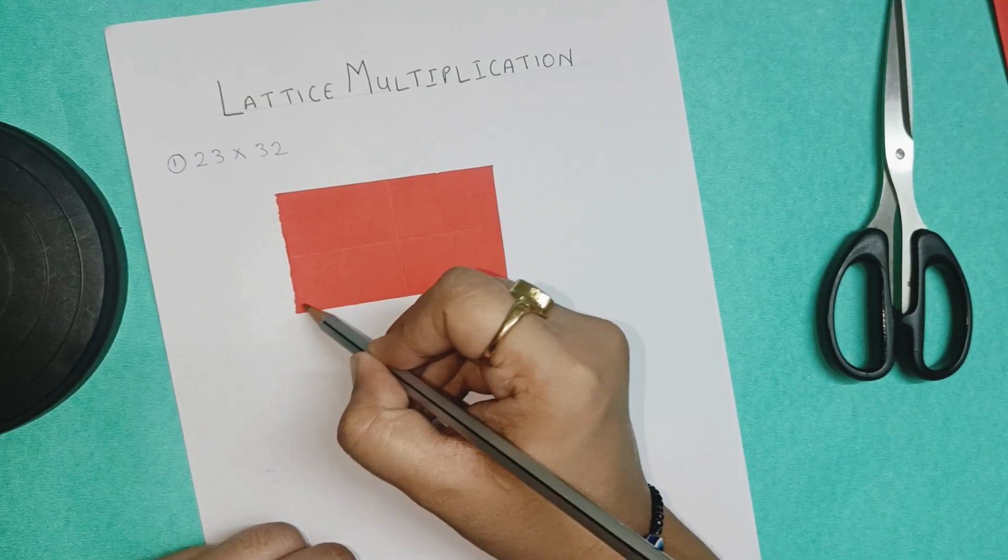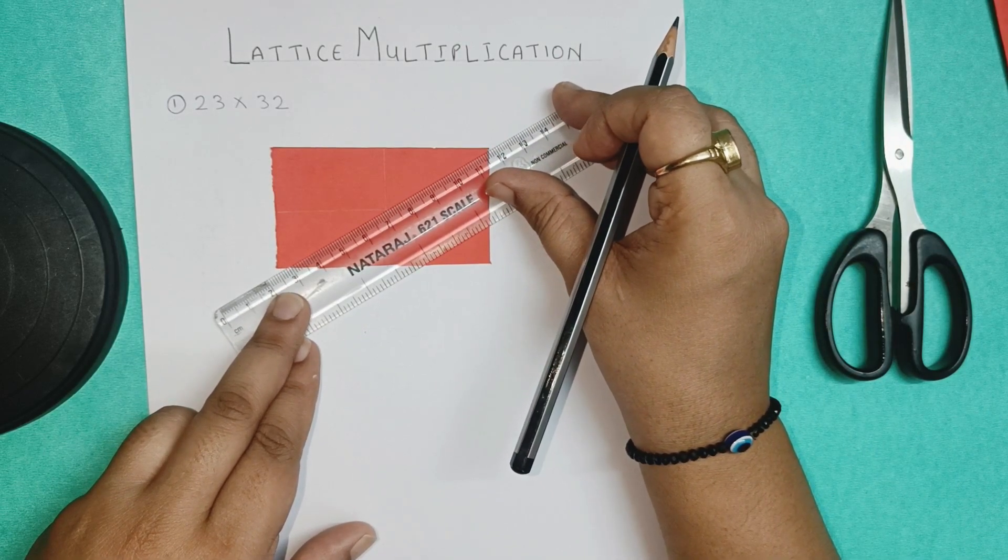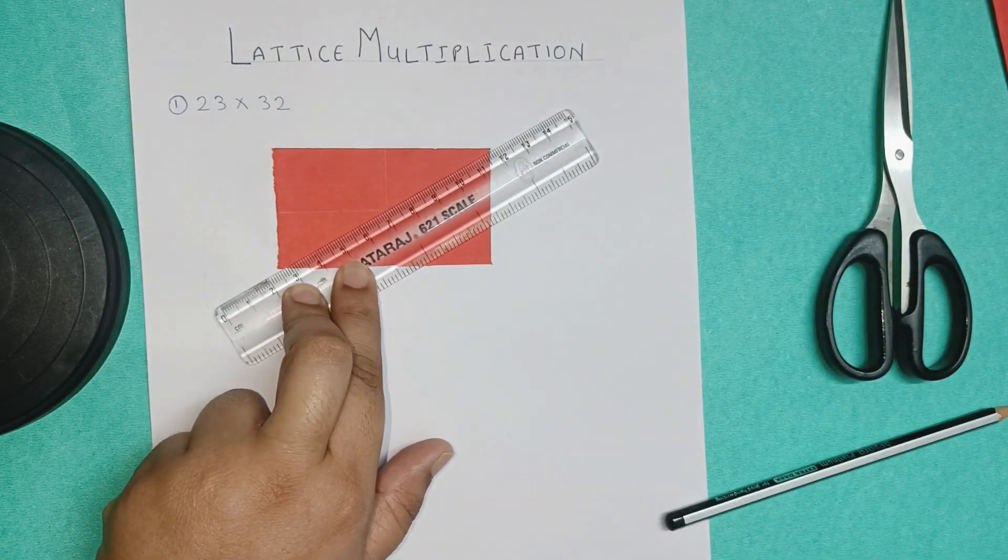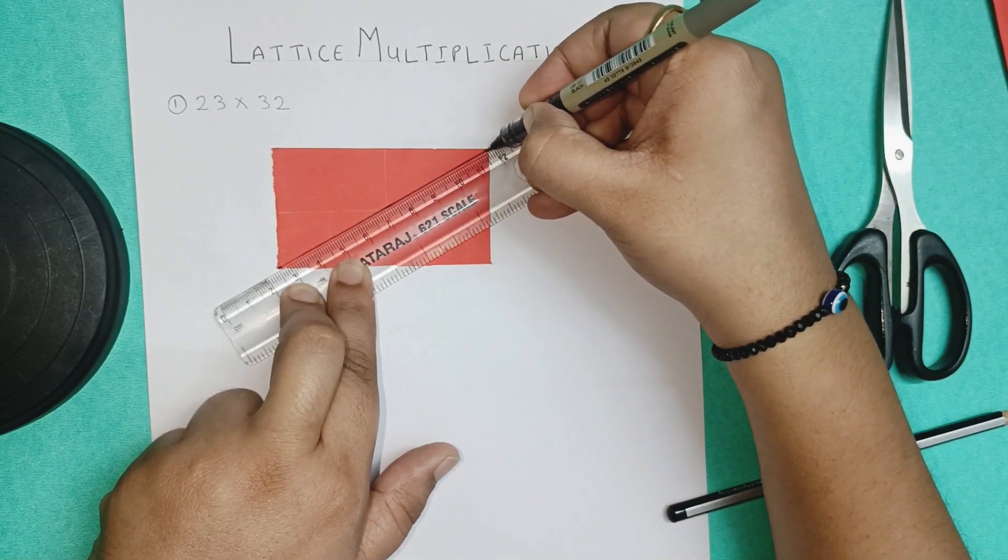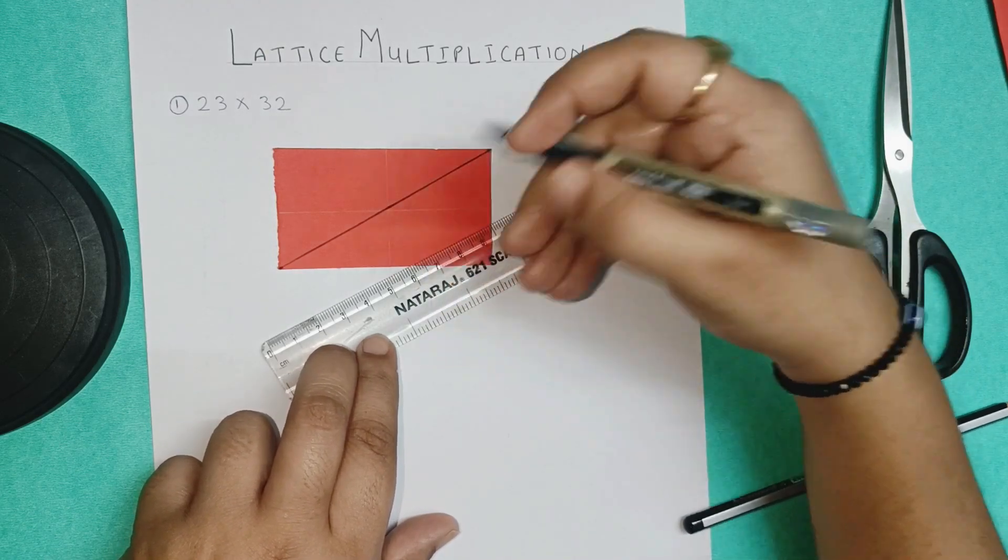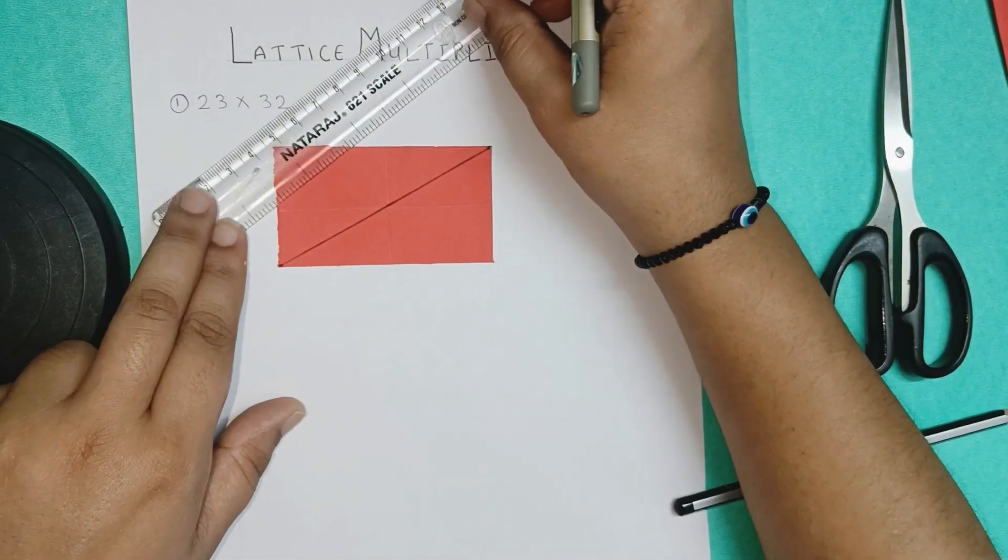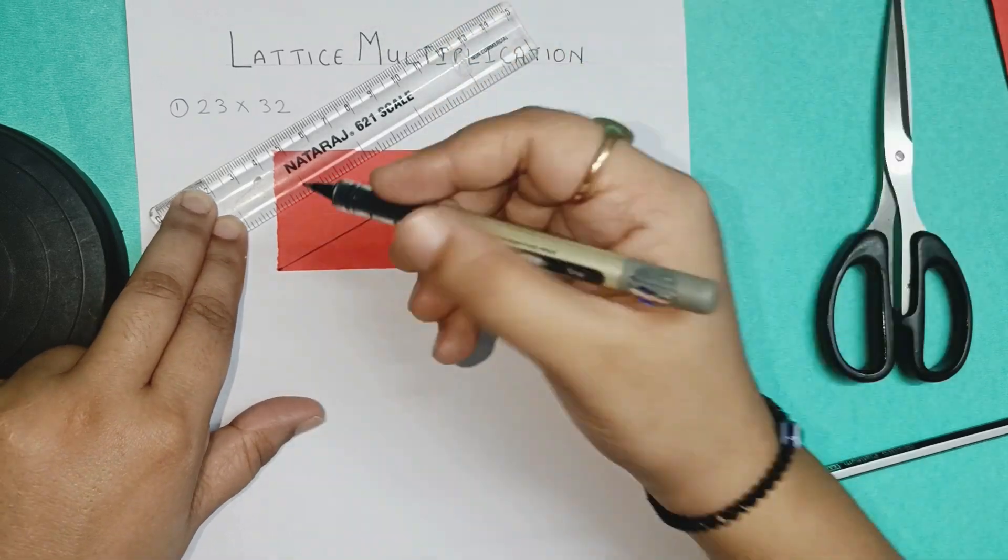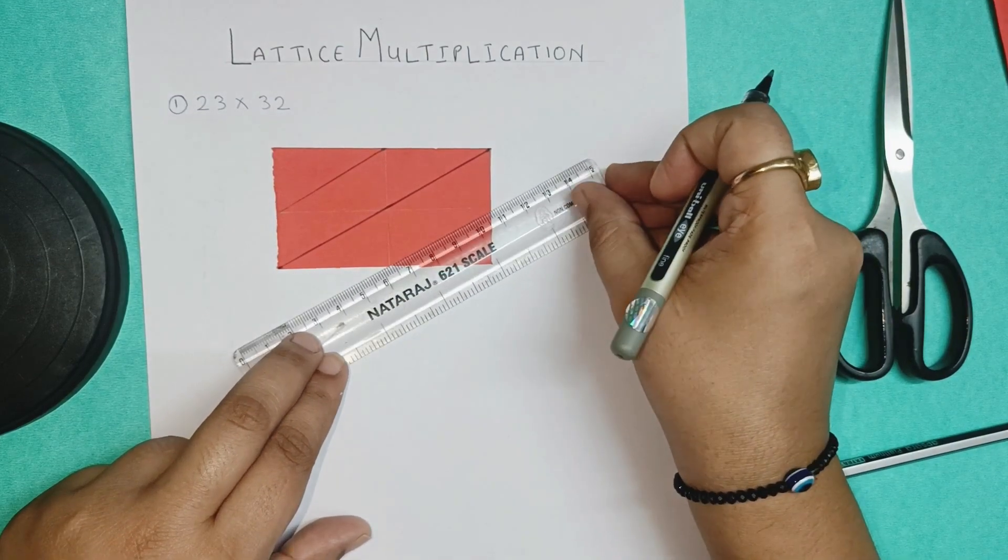Now we have to join it like this. Okay we have to use ruler. Here I am using pen directly to draw the line. Simply join it like this. Now we have to join these two points also. And these two points also. So use ruler to join these two points. And these two points.